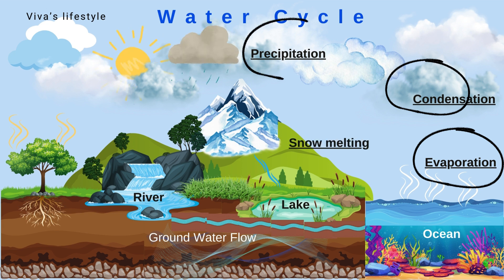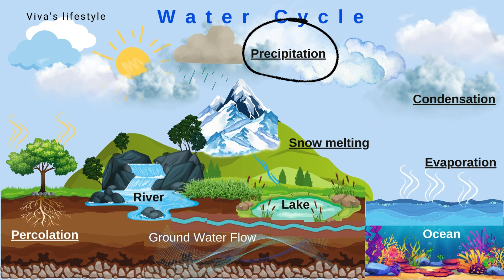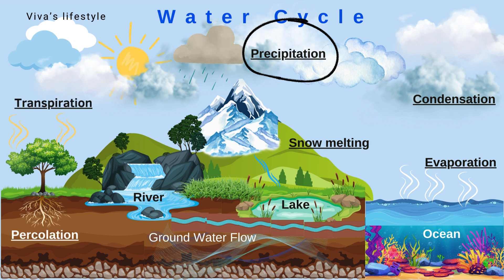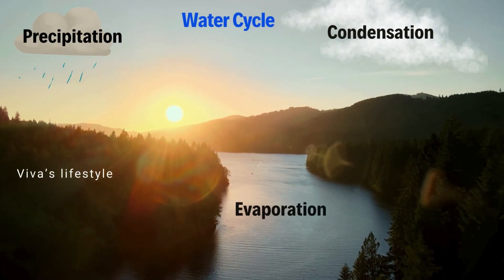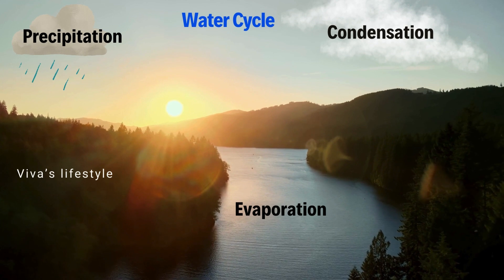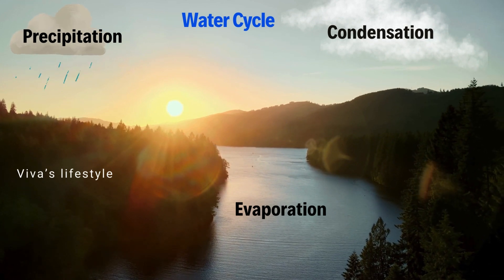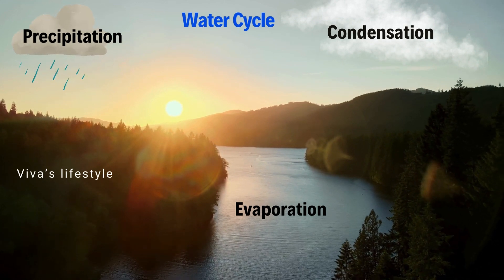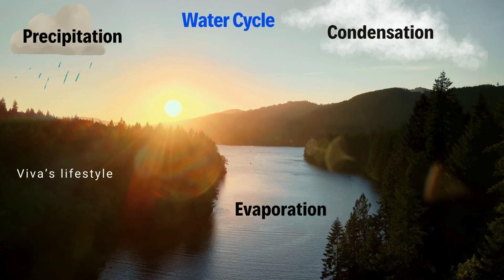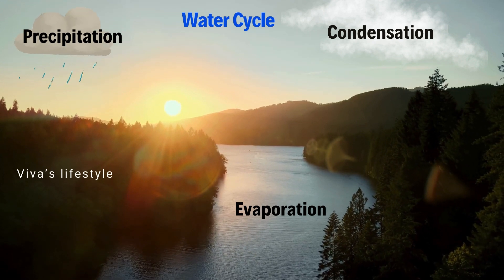Other sub-movements of water are snow melting, percolation, and transpiration. In the water cycle, the water moves in different phases continuously from the Earth to the cloud and again back to the Earth.